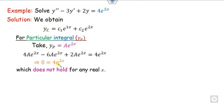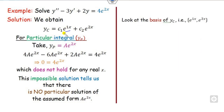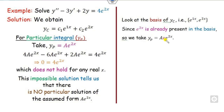This impossible equation tells us there is no particular solution of the form Ae^(2x). So our target is to find the suitable form of the function. How do we know which form to use? We check whether e^(2x) is present in yc and how many times. We can see e^(2x) appears one time in yc. So we multiply by x once — giving yp = Axe^(2x). If e^(2x) appeared two times we would multiply by x², which we will see in the next example.